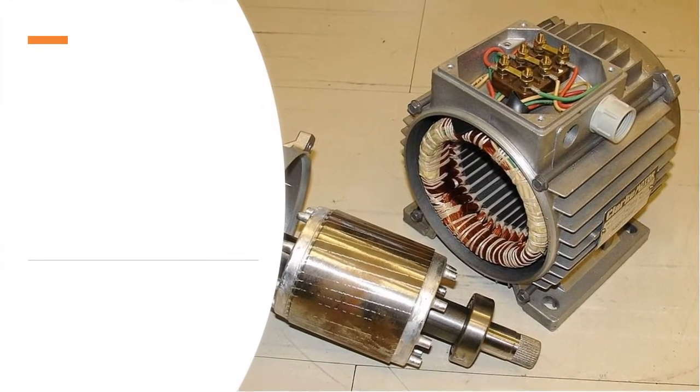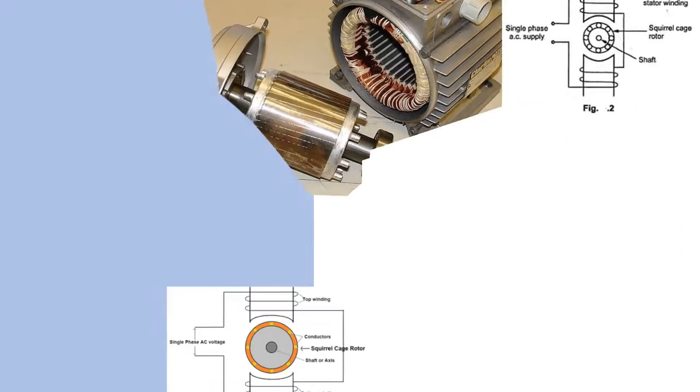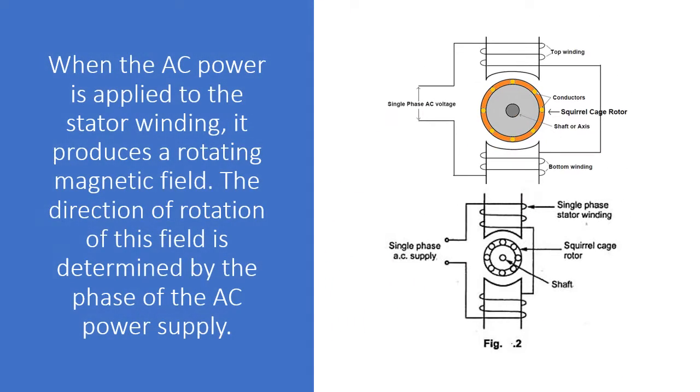The working principle of a squirrel cage induction motor can be summarized as follows. When AC power is applied to the stator winding, it produces a rotating magnetic field.